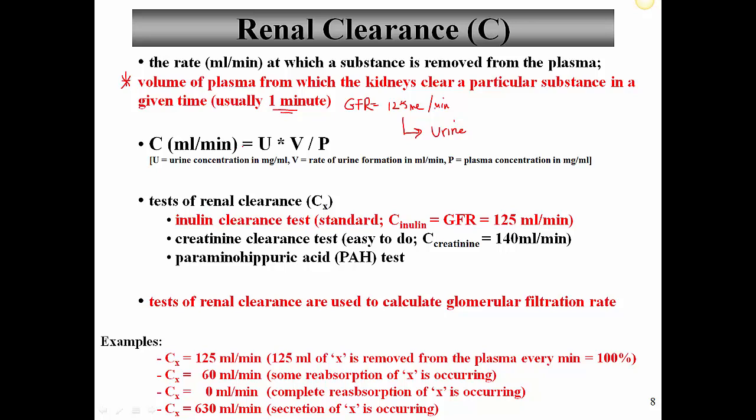The mathematical formula for renal clearance (in mL/min) equals urine concentration (mg/mL) multiplied by the rate of urine formation (mL/min), all divided by the plasma concentration (mg/mL). What we're essentially doing is comparing the urine concentration of something to its plasma concentration — if we find all of a substance in the urine that was in the plasma, the kidneys have cleared 100% of it.